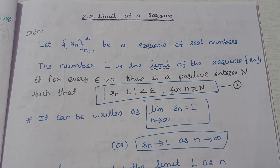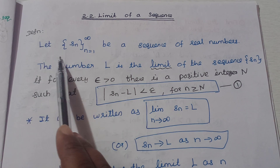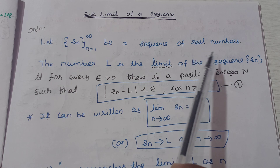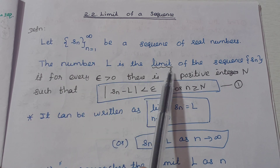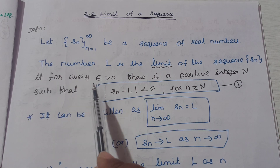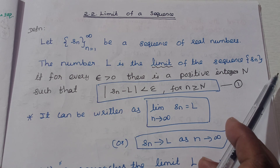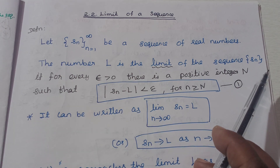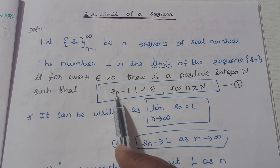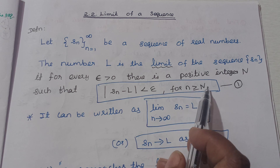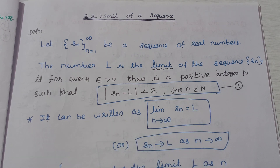The real analysis sequence unit is the limit of a sequence. We will see the definition of a sequence. A sequence of real numbers — the number l is the limit of the sequence s_n if for every epsilon greater than 0 there is a positive integer N such that the modulus of s_n minus l is less than epsilon for n greater than or equal to N.